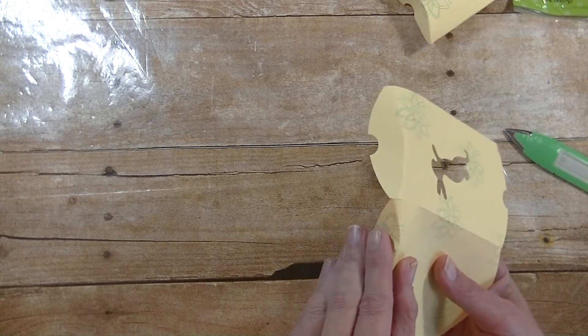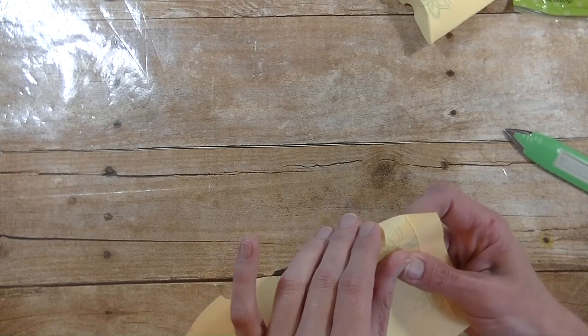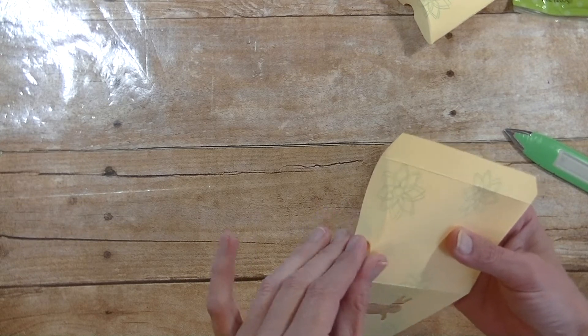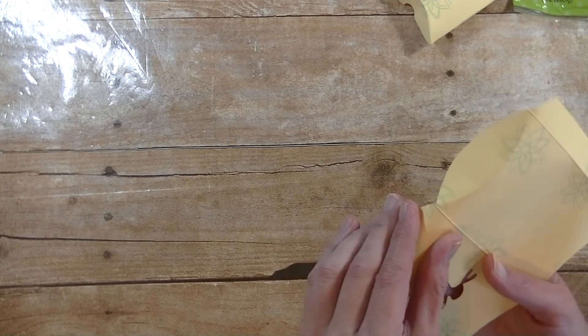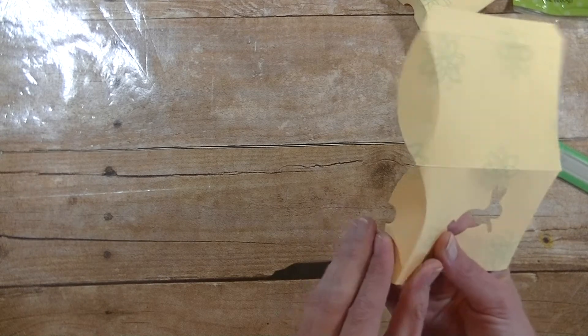Then we have the curvy part and I just again kind of finger press it. For my box, I used plain white paper and I went ahead and stamped flowers on it. I'll show you the stamps that I used in one second.